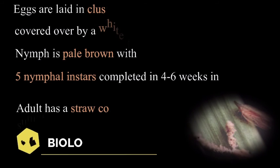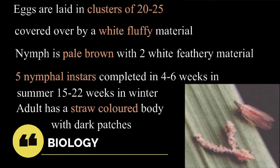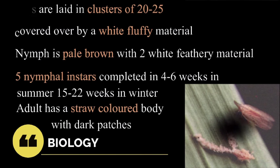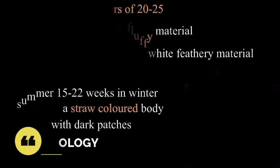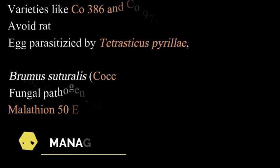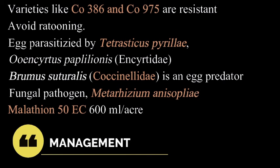Biology: eggs are laid in clusters of 20 to 25, covered over by a white fluffy material. The nymph is pale brown with two white feathery tails. Five nymphal instars are completed in four to six weeks in summer and 15 to 22 weeks in winter. The adult has a straw-colored body with dark patches.